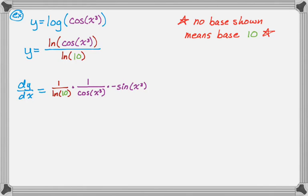So it's 1 over cosine of something times the derivative of cosine of something is negative sine of that thing times the derivative of that thing, and that thing is x cubed, so I'm going to multiply by 3x squared. So I just used the chain rule on that, but I had to use the chain rule twice.